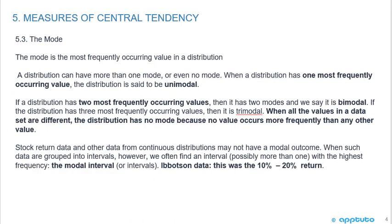The mode is the most frequently occurring value in a distribution. A distribution can have more than one mode, or even no mode. When a distribution has one most frequently occurring value, it's unimodal. If it has two most frequently occurring values, it's bimodal. If it has three, it's trimodal. When all values are different, the distribution has no mode.